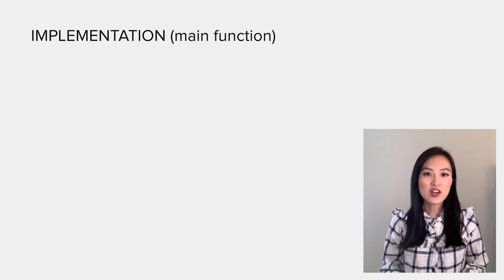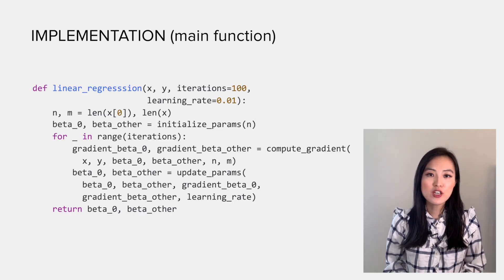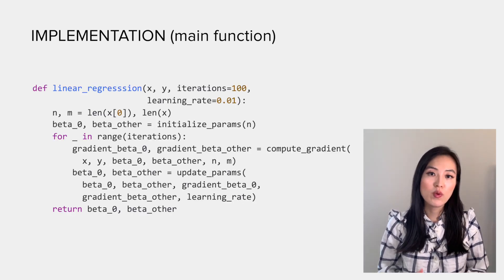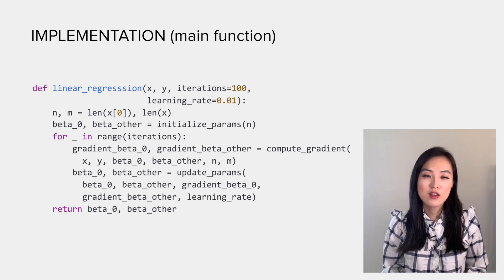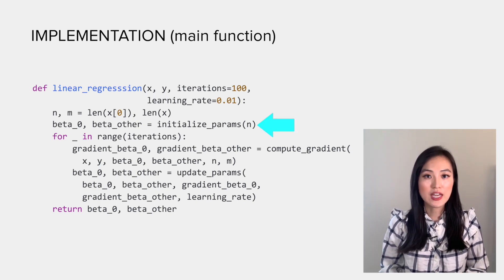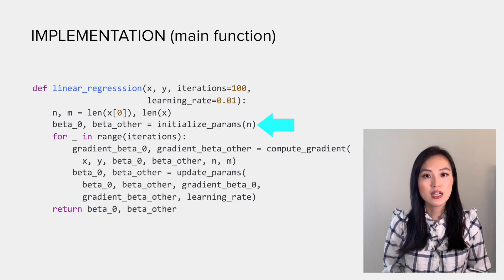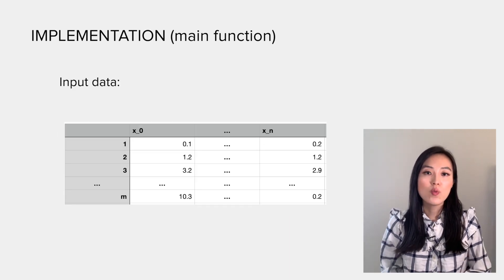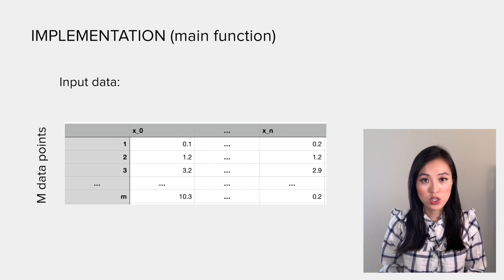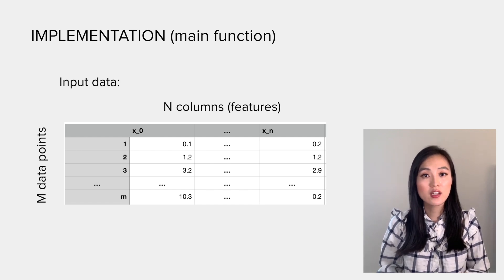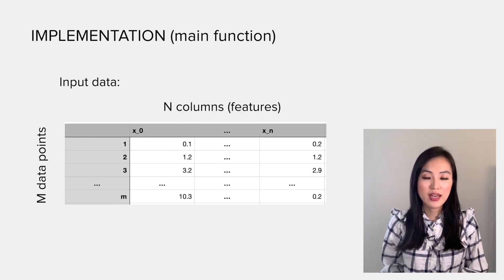So let's start with the main function. The main function follows exactly what we have talked about previously. First, we initialize the parameters based on the dimensions of the input data. You can think of the input data as a wide table.